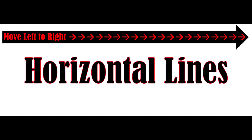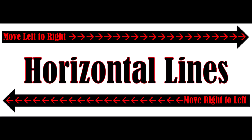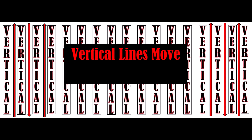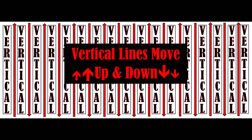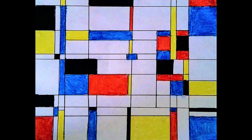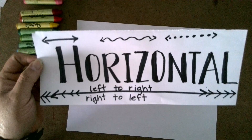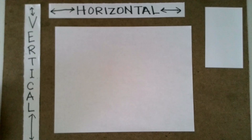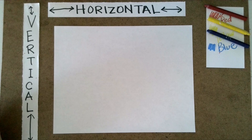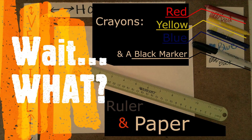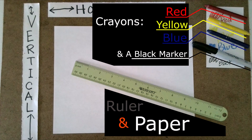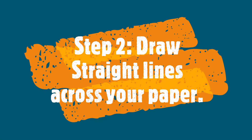Horizontal lines move left to right and right to left, while vertical lines move up and down. To create a Piet Mondrian look-alike, you'll need to gather your supplies: a piece of white blank paper laid down horizontally, a red crayon, a yellow crayon, a blue crayon, a black marker, and a ruler.